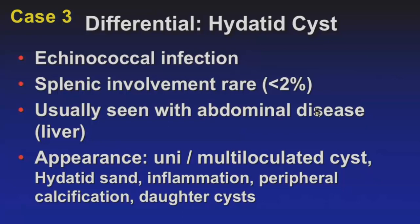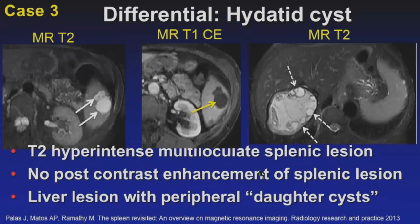Hydatid cysts are seen with echinococcal infections. Splenic involvement is very rare — less than 2% — and usually occurs with widespread abdominal or liver disease. The appearance is variable: unilocular or multiloculated, with possible high-attenuation internal material from proteinaceous fluid or inflammation, and peripheral calcifications or daughter cysts. This literature example shows a multiloculated cyst, T2 hyperintense and T1 hypointense, and the liver lesion shows the more characteristic appearance with multiple peripheral daughter cysts.